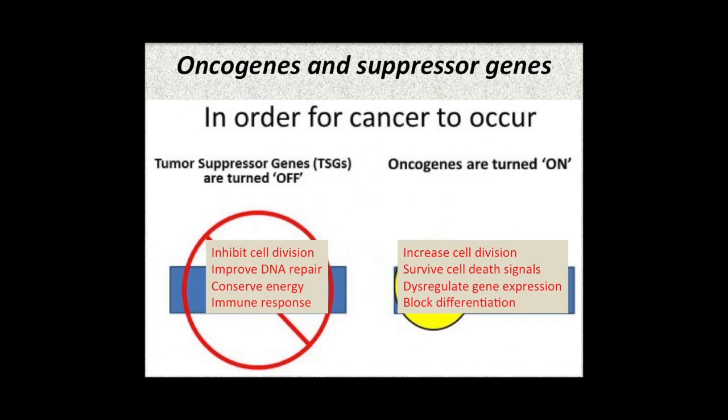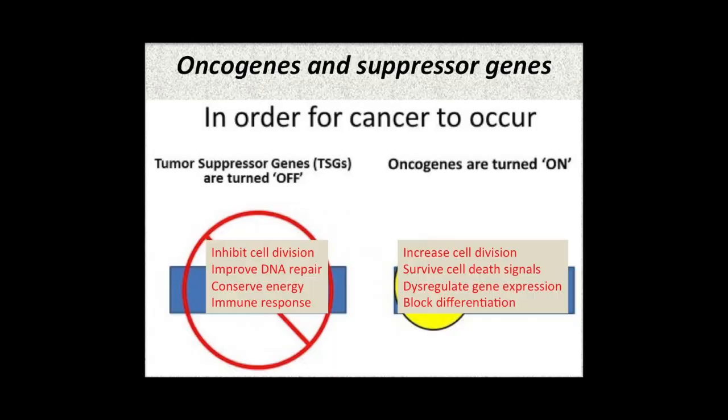Suppressor genes inhibit cell division, stop the cell process from happening, improve DNA repair — saying wait, I've got damage, I need to fix that before I proliferate again — conserve energy, stop using glucose, and are responsive to the immune system. Oncogenes, on the other hand, tell the cell through signals to keep growing, evade cell death pathways, and encourage disruption of the normal balance between which genes are expressed and which are shut off in an individual cell type.